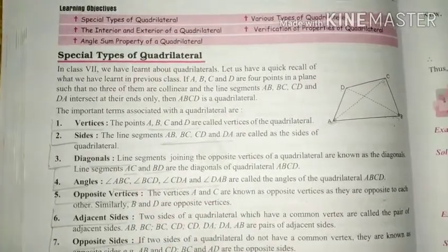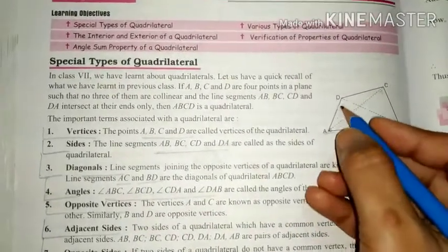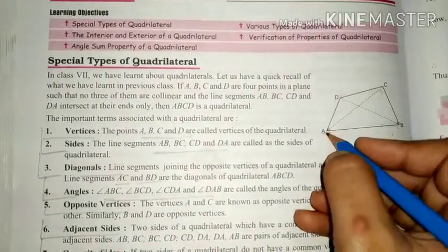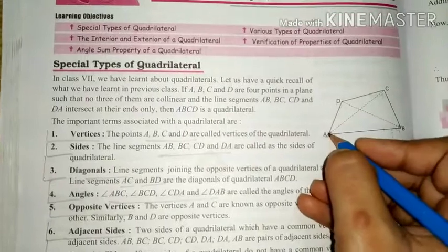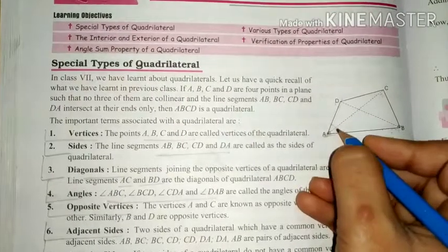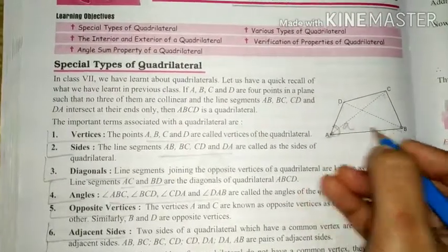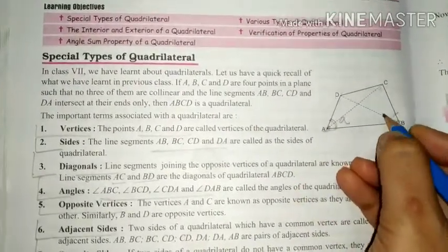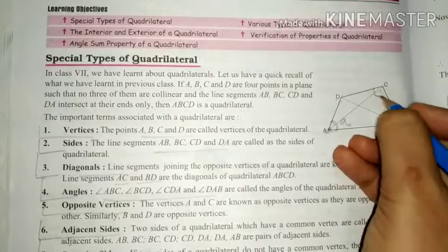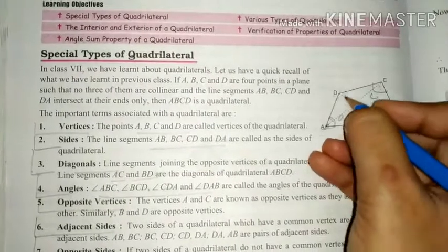Angles — what are the angles? When the sides are intersecting at one point, they form an angle. The angles are at vertices A, B, C, and D.